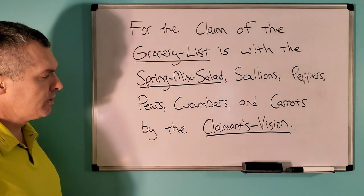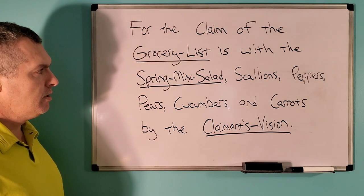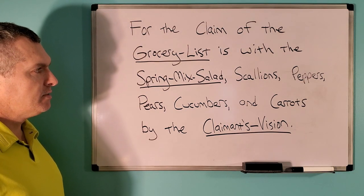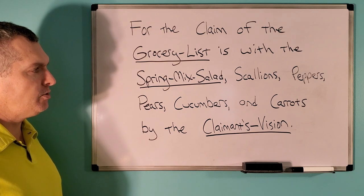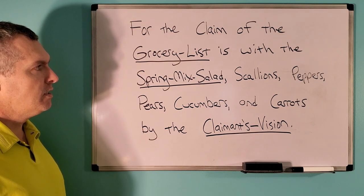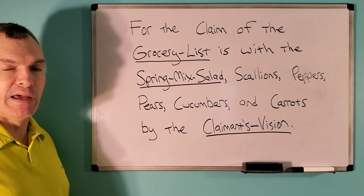Backwards: for the claimant's vision of the spring mix salad, scallions, peppers, pears, cucumbers, and carrots, is with the grocery list by the claim.